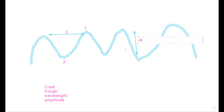Number one or number two? The up one is crest. Remember, the up one is crest. Judy, where is the trough? Noor, where is the trough? You mean the distance from here to here is called trough? Listen to me carefully — it's wavelength.